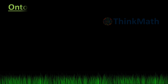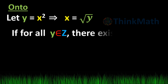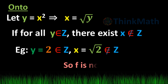Onto: Let y equal to x squared, which implies x equal to root y. For all y belonging to Z, there exists x not belonging to Z. For example, y equal to 2 belongs to Z but x equal to root 2 is an irrational number and not in Z. Therefore, f is not onto.